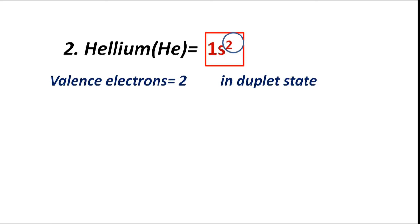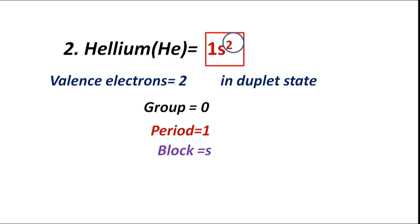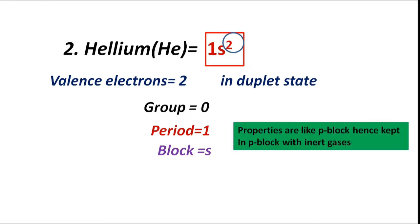Helium (He) has electronic configuration 1s2. Valence electrons are 2; it is in duplet state, hence group 0, period 1. It has only one shell, block S. Valence electrons fill the s sub-shell, but its properties are like p-block elements, therefore kept in p-block. Valency is 0.